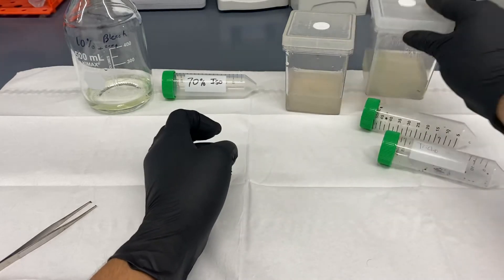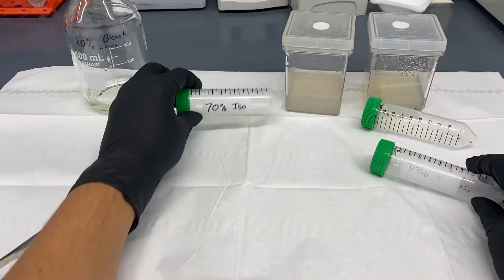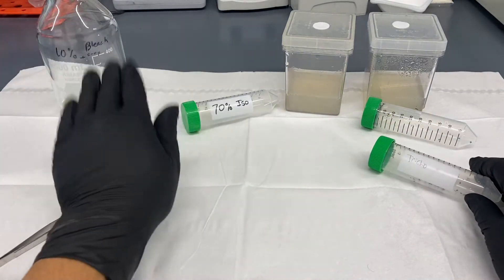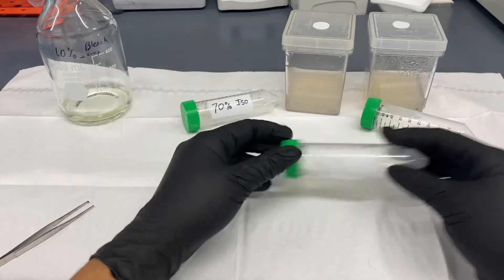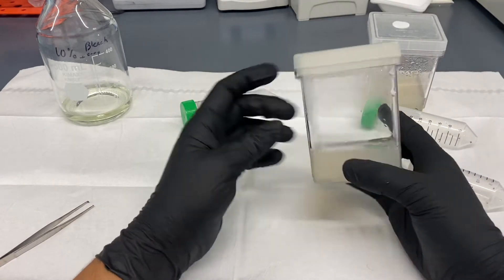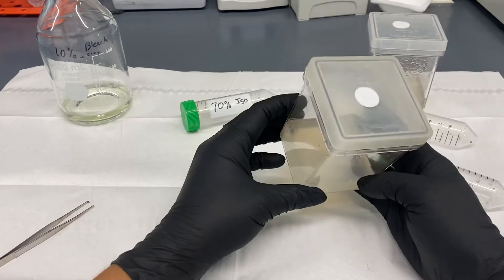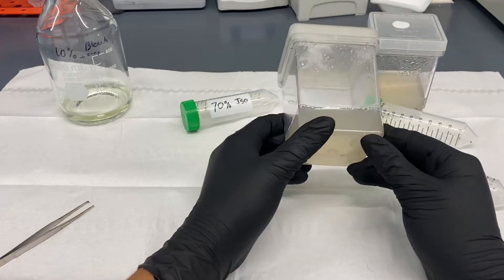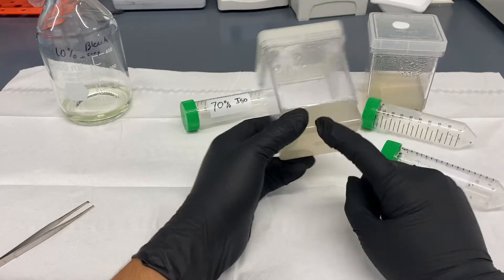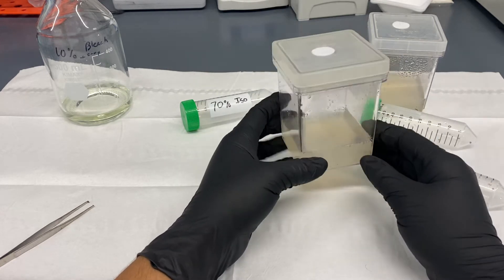You can see I have 70% isopropyl alcohol and a 10% bleach with soap. These are the two solutions I use to disinfect because tissue culture is a sterile practice, 100% sterile, meaning this media right here supports bacteria, fungus, anything you can think of that can grow, algae will grow on this media.